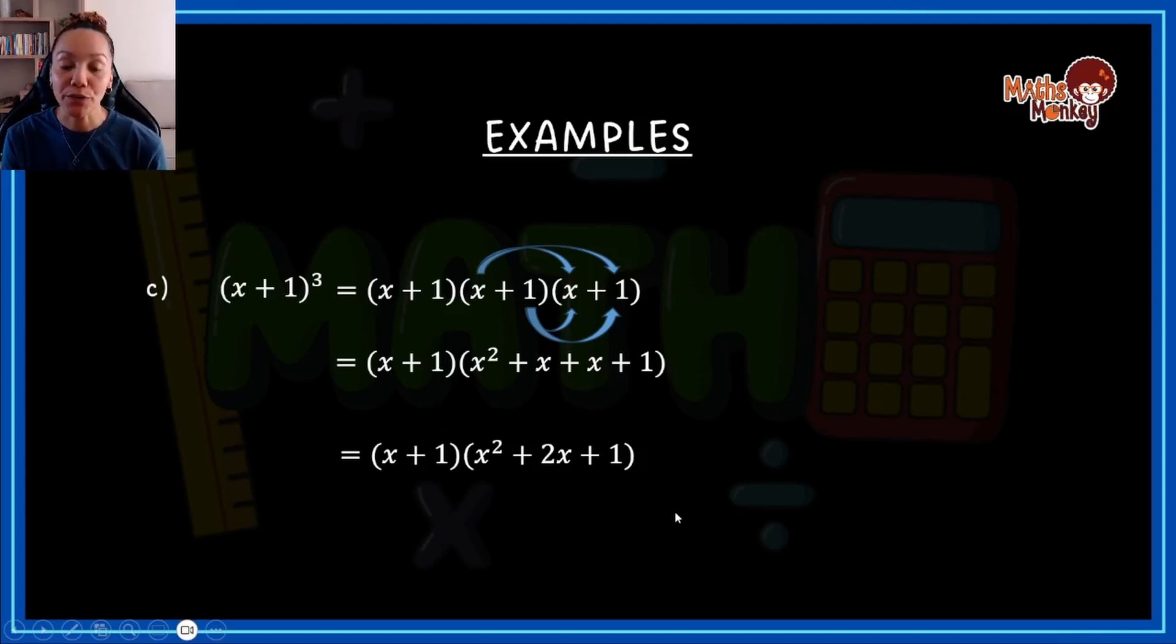So how do we deal with this now? We'll go, okay, first term again, multiply. Second term, sign number letter, sign number letter. Then again at the bottom, do the same.